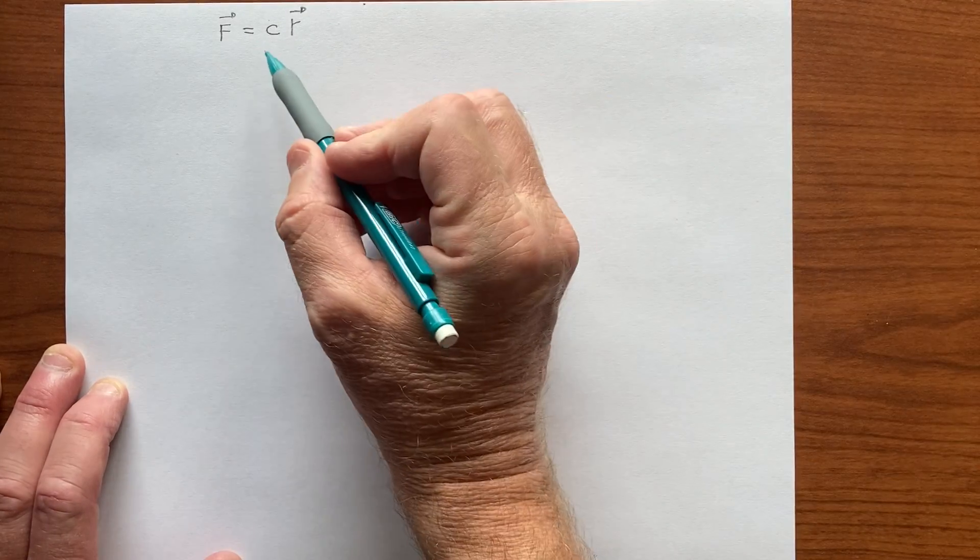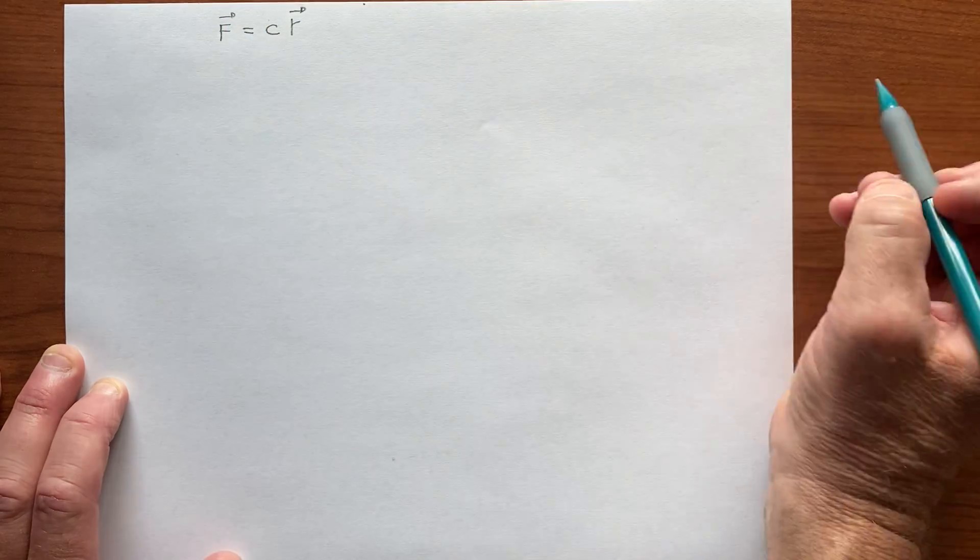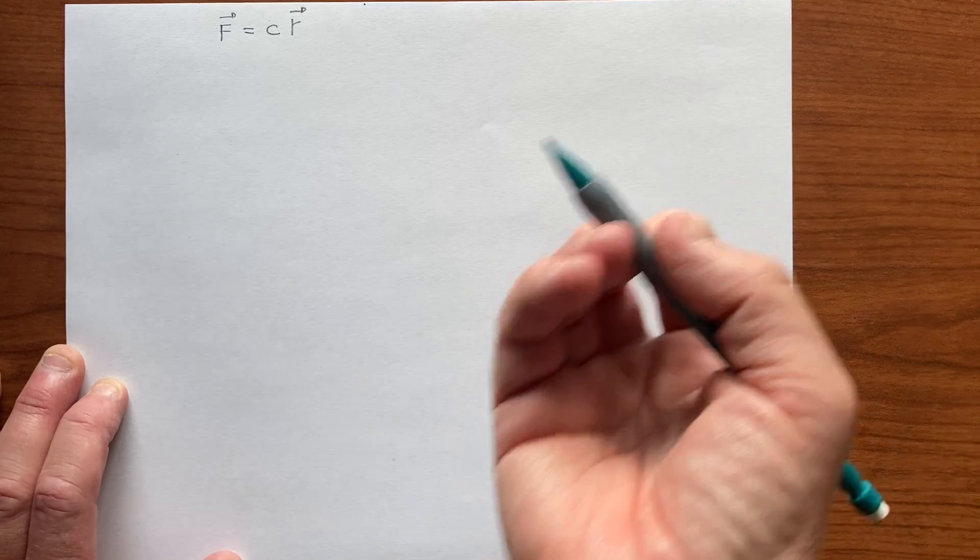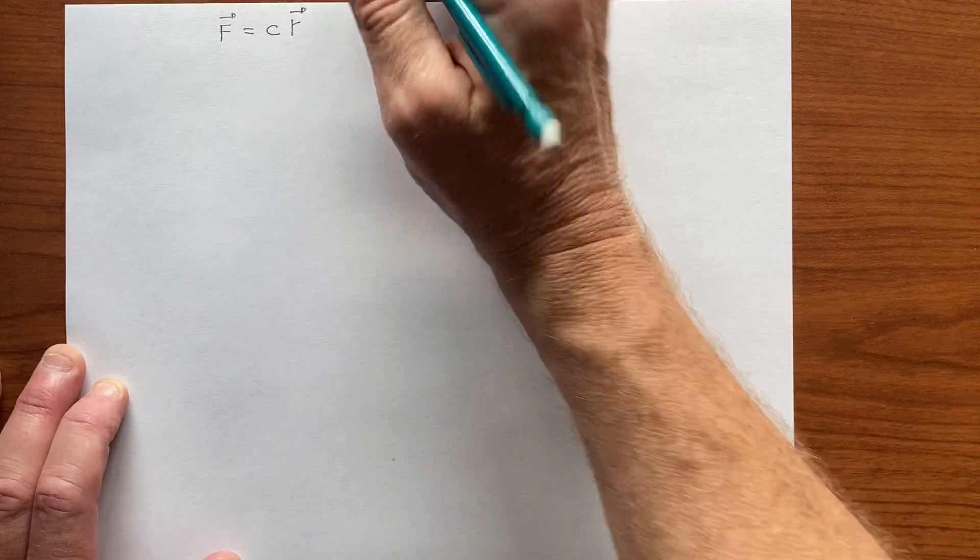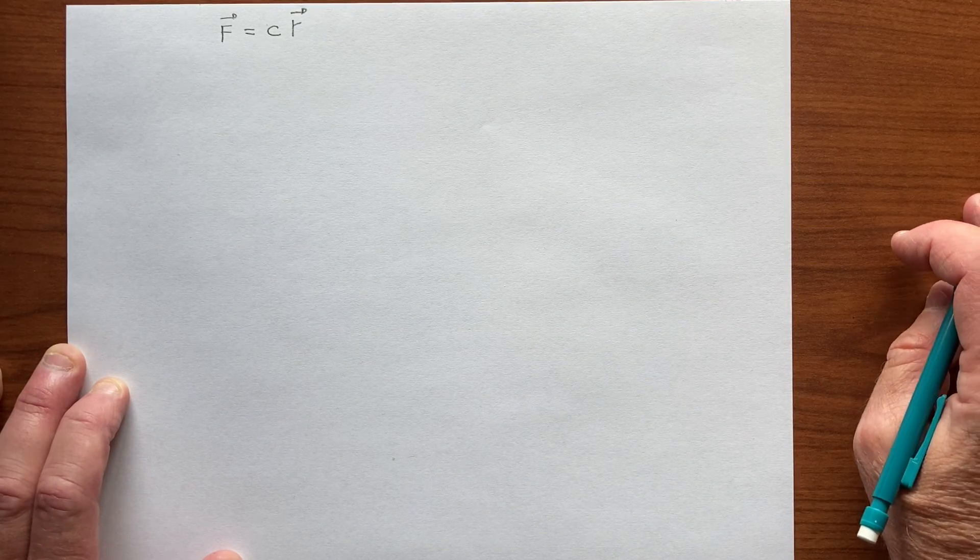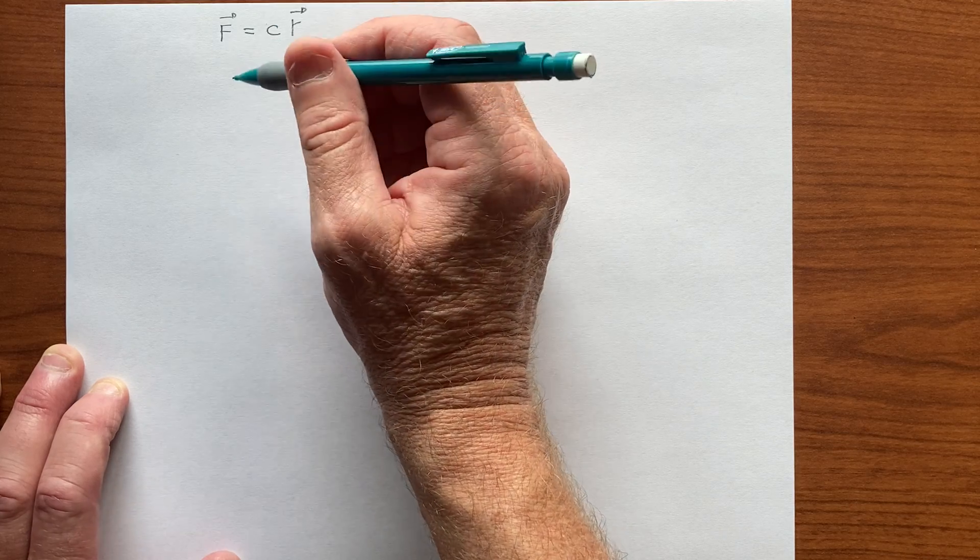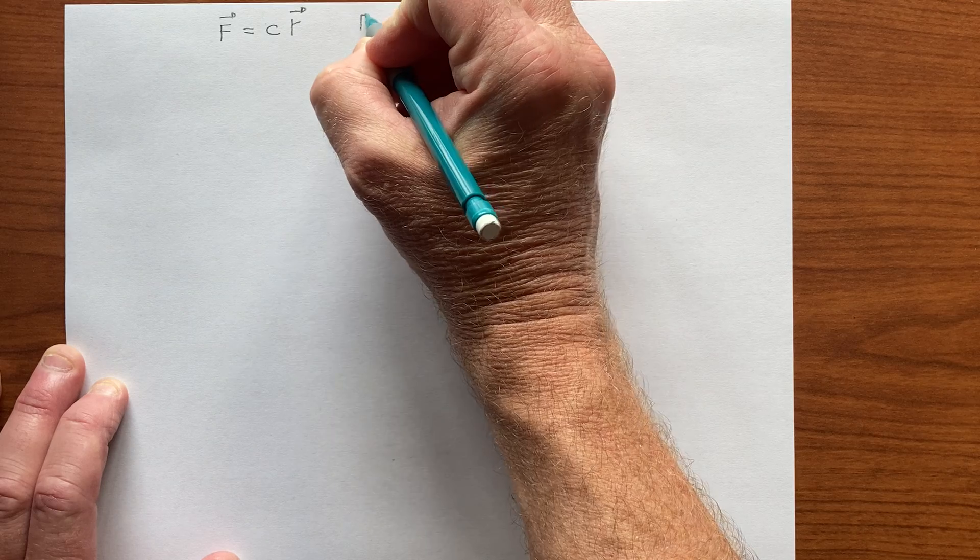So we could take the curl of F, and if this is in spherical coordinates, then we would have... Well, let's write this out in Cartesian coordinates.